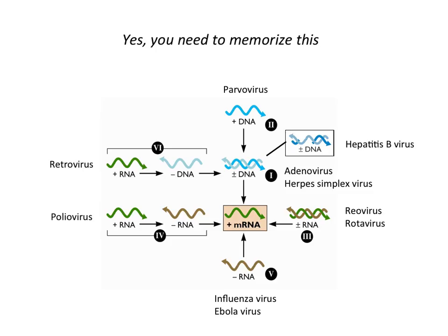In terms of memorization, this is the one thing I think you should memorize: the number seven, which is easy — you have lots of number seven references here in New York City. And this scheme, which is very easy to do: you put mRNA in the middle and then draw the seven different kinds of viral genome around it. I don't care if you know the numbers — that doesn't mean anything. All you need to do is draw all these viral genome types and then be able to draw the pathway to mRNA.